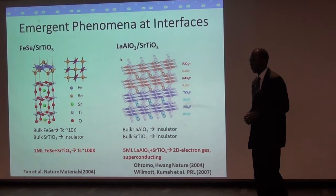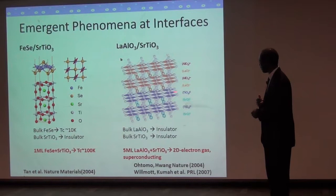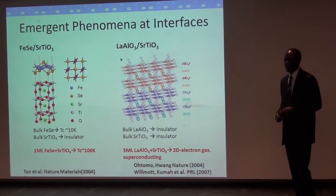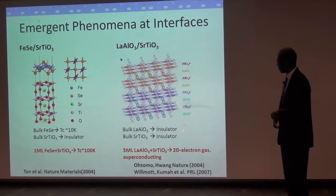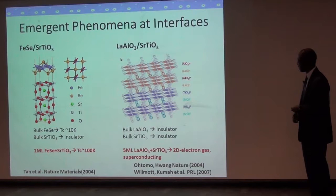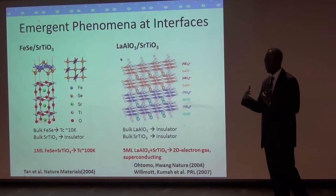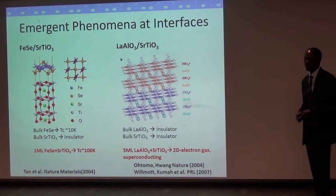Another important material where interfaces produce new effects is lanthanum aluminate and strontium titanate. Lanthanum aluminate and strontium titanate are both complex oxides, and in their bulk form they are both insulators. But people found that when you grow very thin films of lanthanum aluminate on strontium titanate substrates, the interface between these two materials forms a two-dimensional electron gas which is highly conducting, and at very low temperatures has superconducting properties and magnetic properties which do not occur in the bulk forms of these component materials.